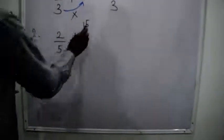Then I'm adding this result to the numerator. Add this to this: 15 plus 2. That will give me 17. So my final answer is 17 over 5.